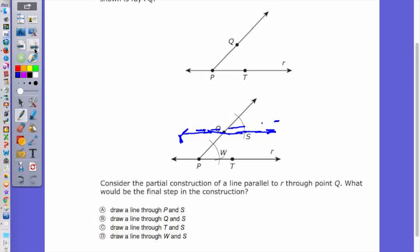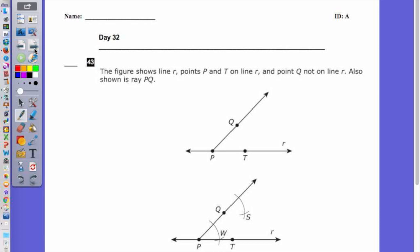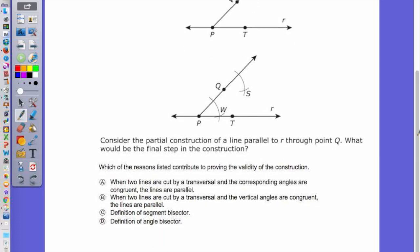43 is that same type of construction. Consider the partial construction of a line parallel to R through point Q. What would be the final step? But they now say, which of the reasons listed contribute to proving the validity of the construction? I realize that that wording might sound weird. So when it says, when two lines are cut by a transversal, and the corresponding angles are congruent, the lines are parallel. That at least sounds like something to do with parallel lines. When we go through it, that's actually going to be the answer.